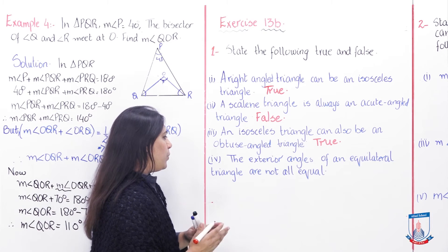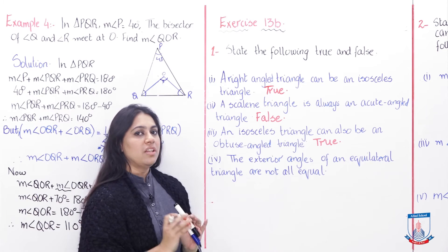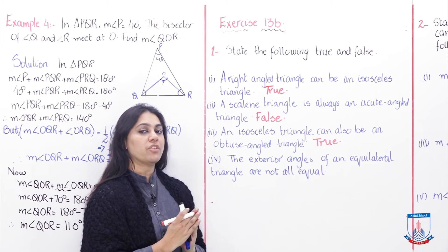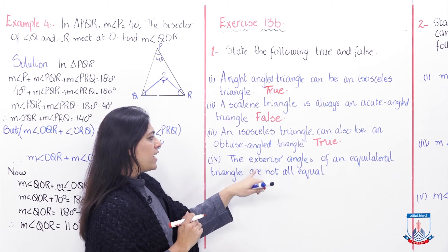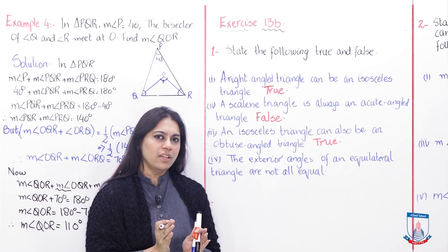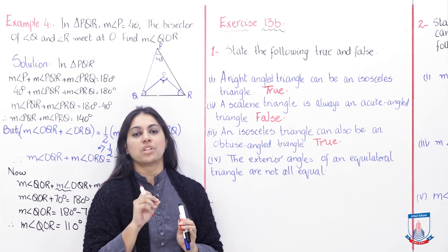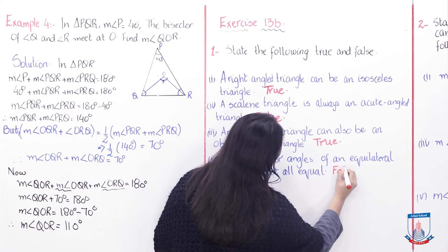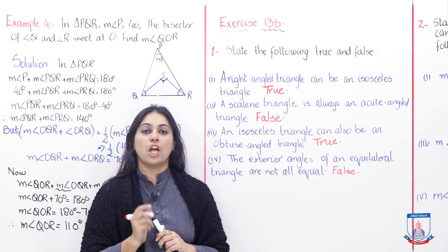Next: the exterior angles of an equilateral triangle are not all equal. An equilateral triangle has all three sides and all three angles equal. So its exterior angles would obviously also be equal. This statement says they are NOT equal, which is incorrect. So this statement is FALSE. We are done with the true and false questions.